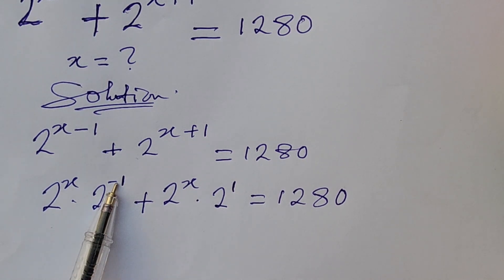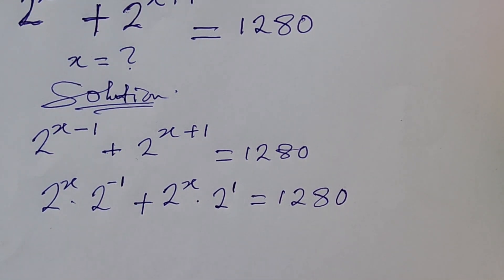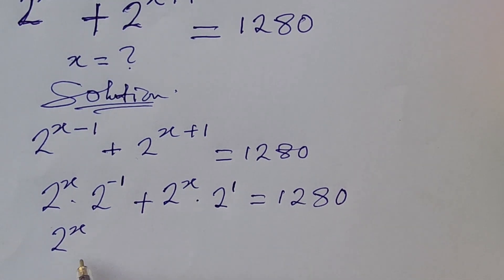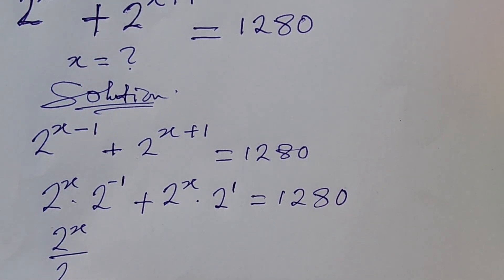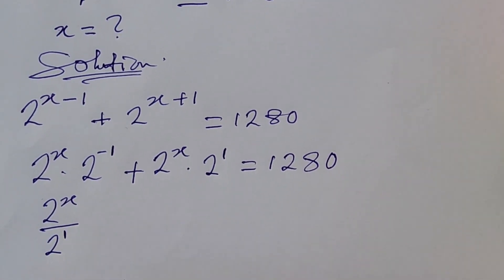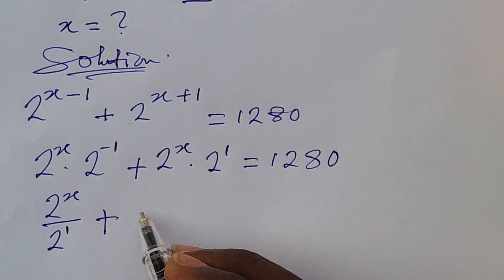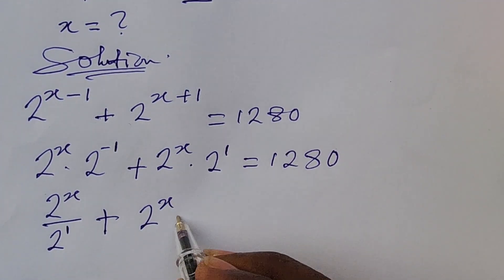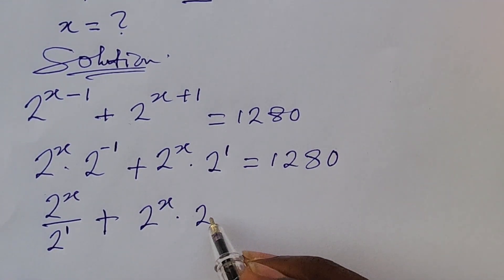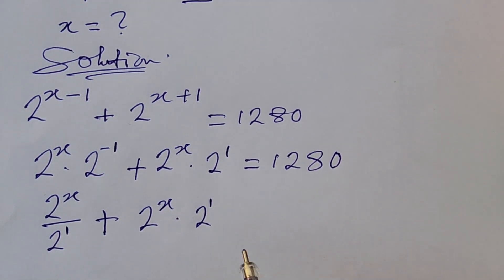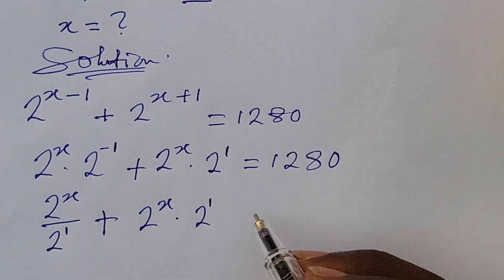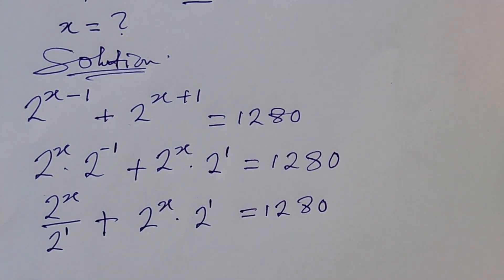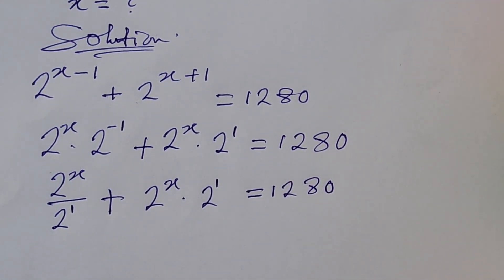Now we can remove the negative exponent, writing 2 to the power of x over 2 to the power of 1, plus 2 to the power of x times 2 to the power of 1. Of course 2 to the power of 1 gives us 2, but let's keep this form, equal to 1280.